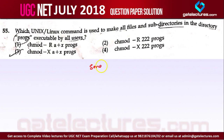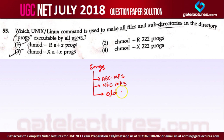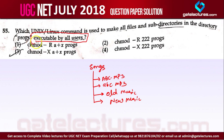Let's say you have a folder, and in this folder you have files like abc.mp3 and other files and folders. You want to give executable access to all the users — to everyone. The question is asking how to make everything executable by all users, and the answer is found in that line.